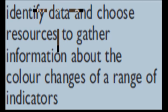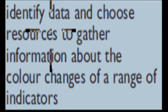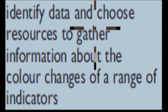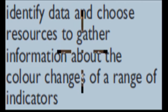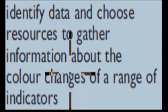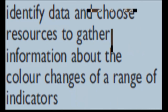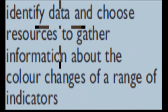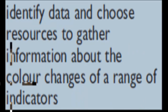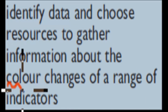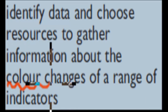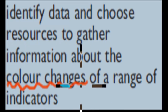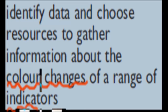The experiment says: identify data and choose resources to gather information about the color changes of a range of indicators. So, what we have to do for this experiment is test different indicators and see how they respond to different substances, and to see what kind of colors they change to.